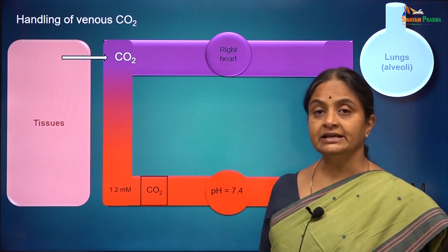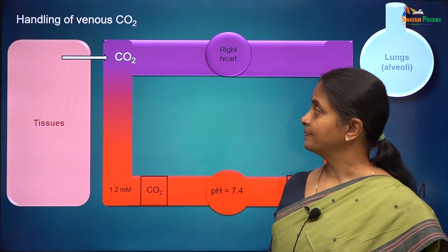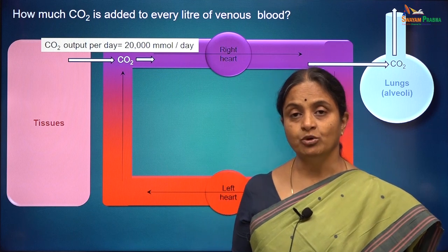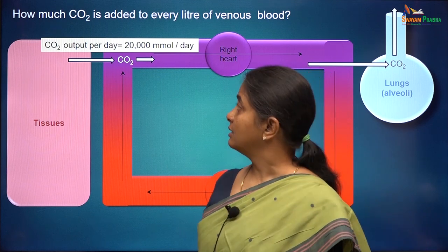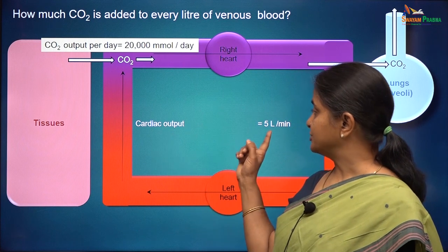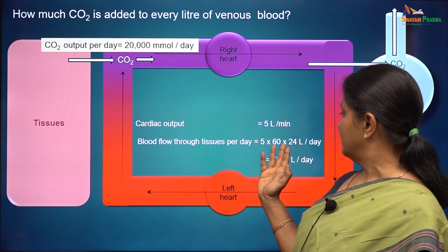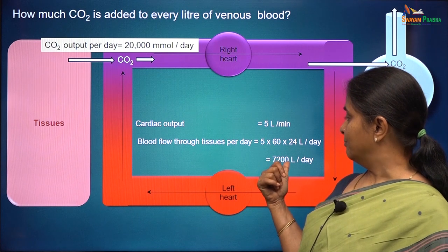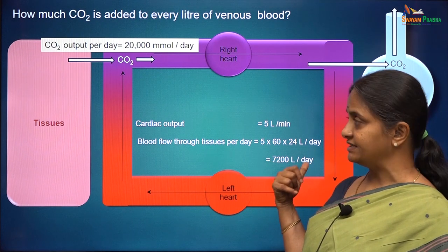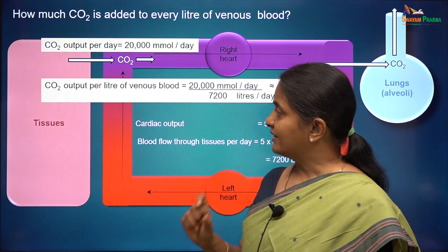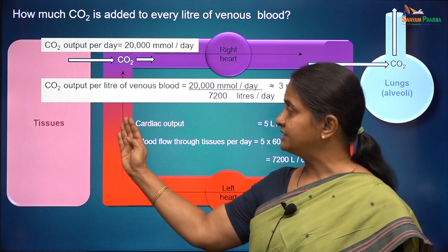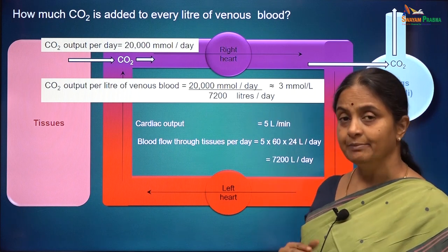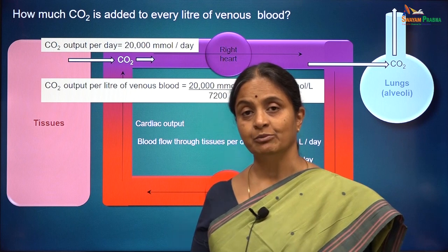How much carbon dioxide is added to venous blood? Carbon dioxide output per day is about 20 moles or 20,000 millimoles per day. The cardiac output is 5 litres per minute, and in a day there are 1,440 minutes, so blood flow through tissues is 7,200 litres per day. We can work out the carbon dioxide output per litre of venous blood as 20,000 divided by 7,200, which gives about 3 millimoles per litre.